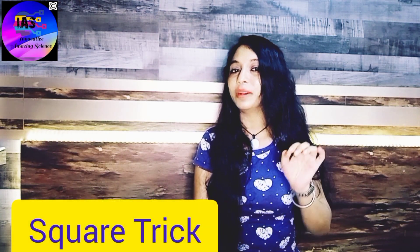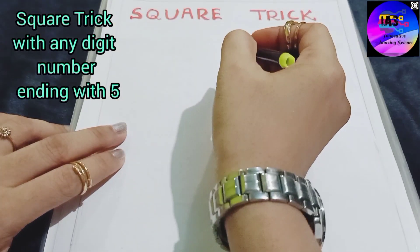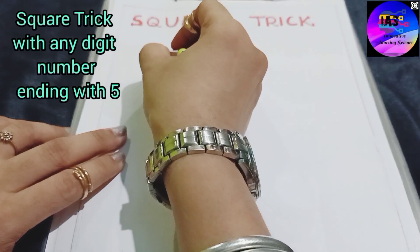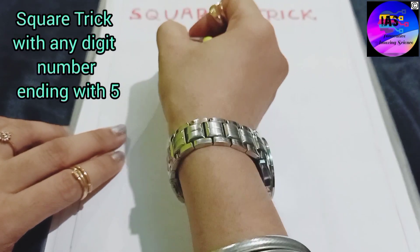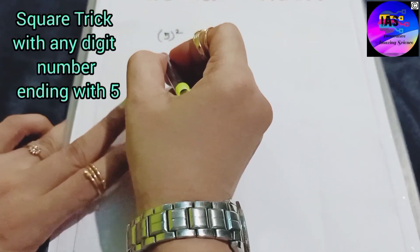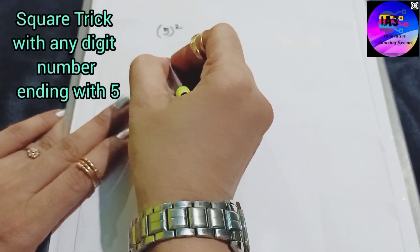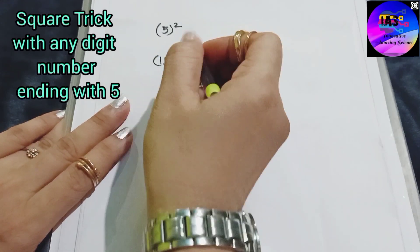I'm going to share the square trick taking this number five. Are you excited? Let's get started. So the first thing we are going to do is write the number. Let's start with 5 square, then we will continue with 15 square, then we will write 25 square.